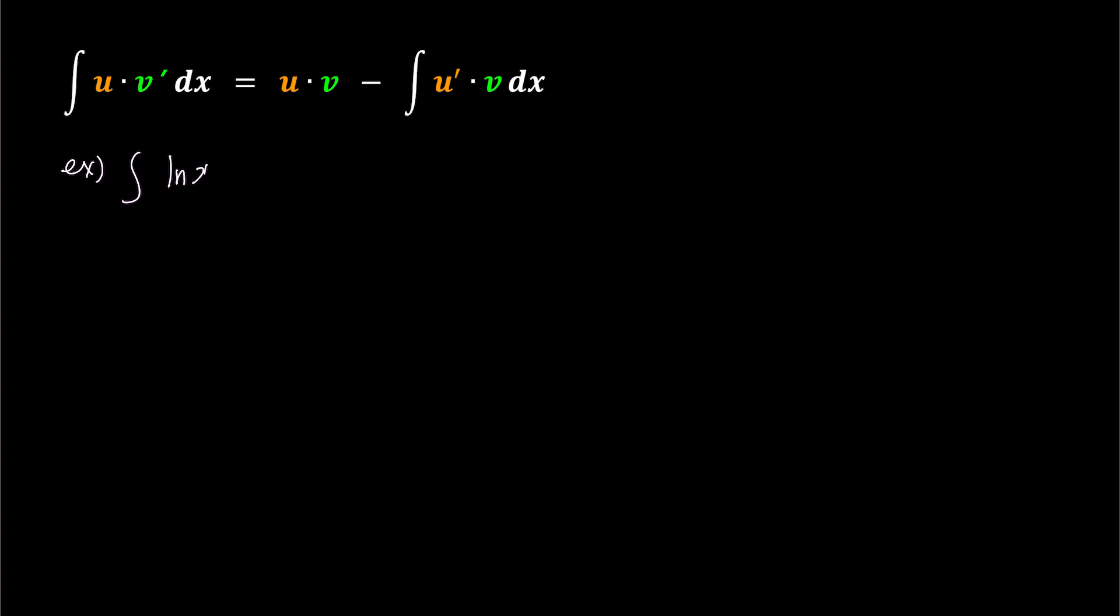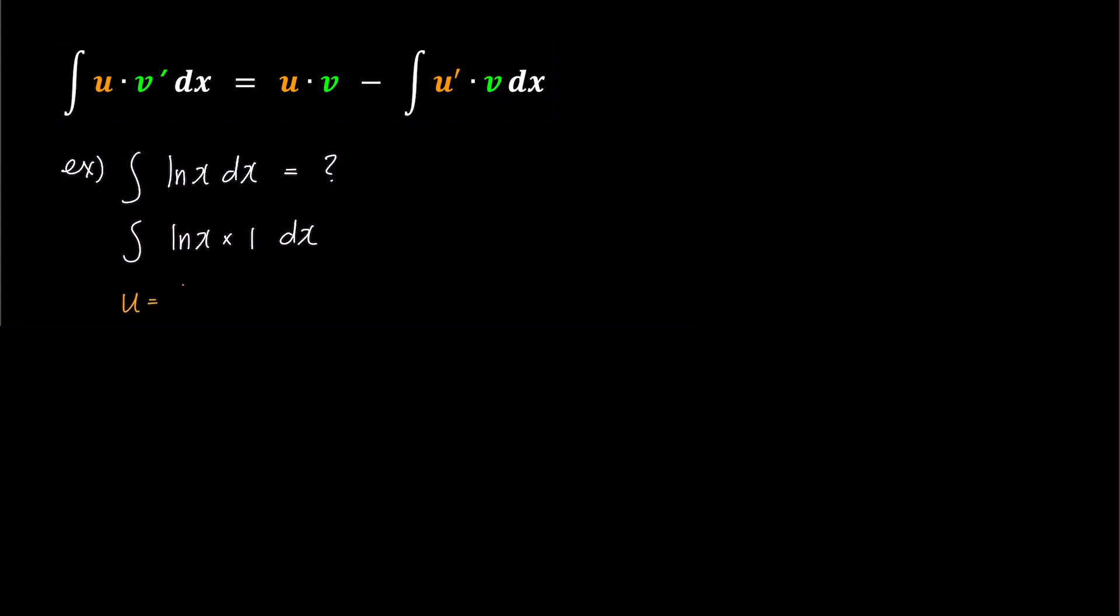Integration by parts is used when you have two terms multiplied together in the integral. In the case of ln(x), it may seem like we have only one term, but there's actually a hidden one that we need to bring out and apply the integration by parts formula, making it an exception to the typical usage of the method.